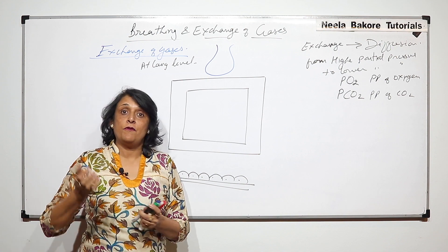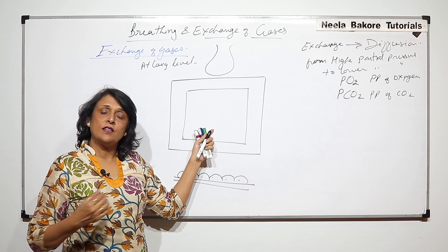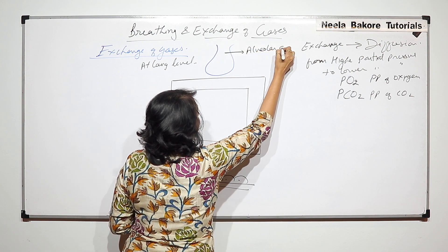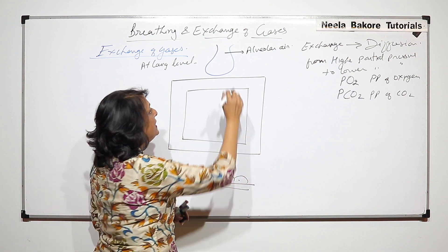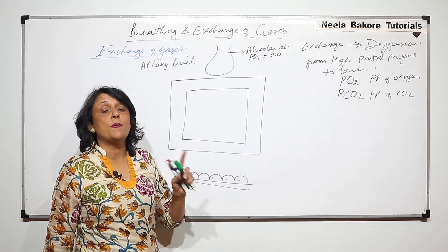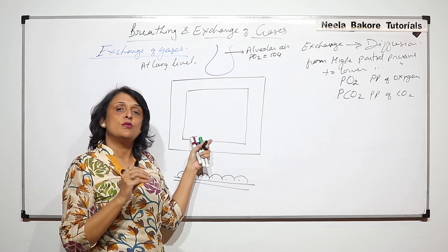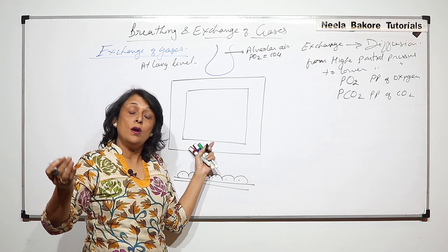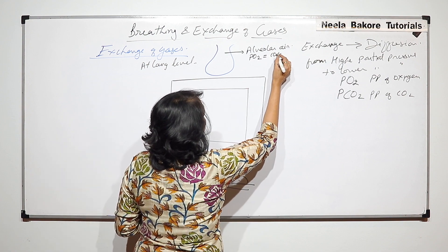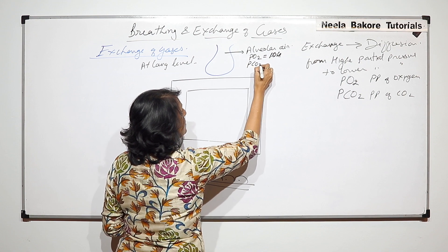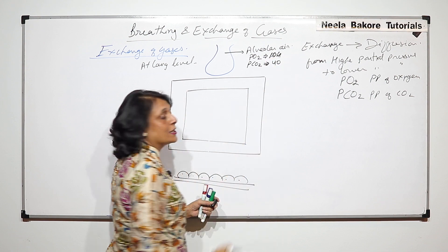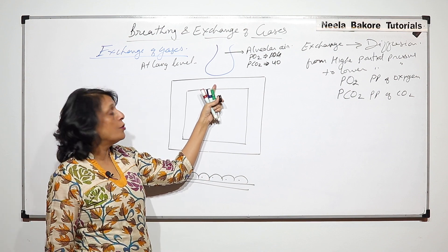When we breathe, fresh air enters the lungs and reaches the alveoli. This alveolar air has a higher oxygen content. The partial pressure of oxygen in the alveoli, PO2, is 104 mmHg. This is slightly less than the atmosphere because inside the lungs there is always some residual air, so fresh inhaled air mixes with it. The partial pressure of CO2 in alveolar air is 40 mmHg.